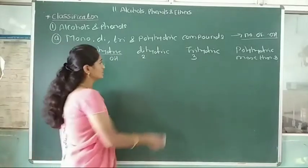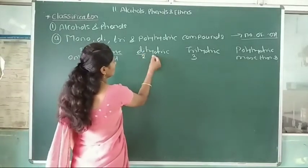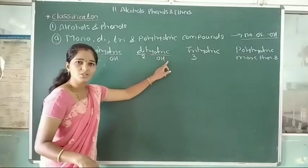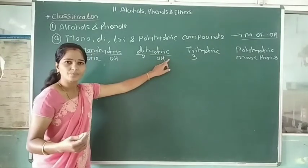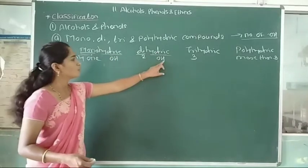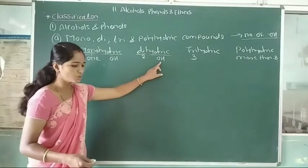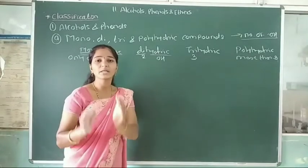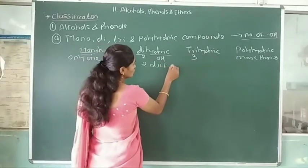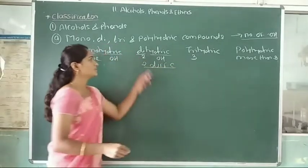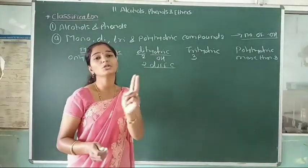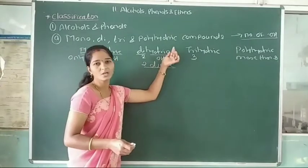Second, dihydric compounds. Di means two, and hydric means OH. In dihydric compounds, two hydroxy groups are situated or attached to two different carbon atoms. This compound is called a dihydric compound.